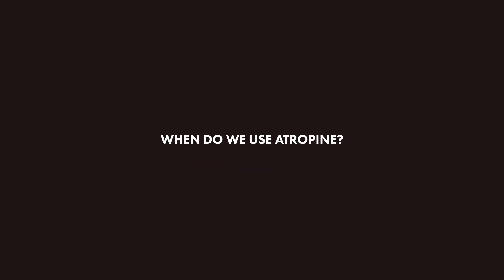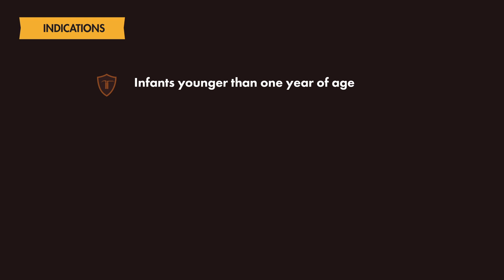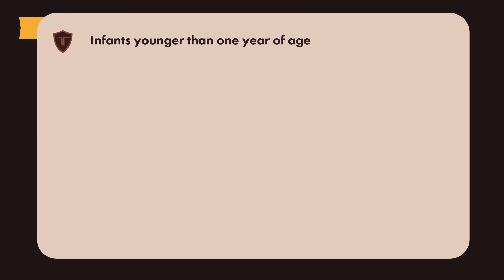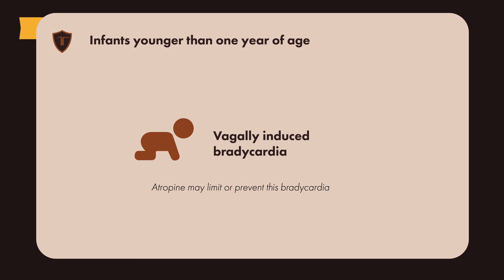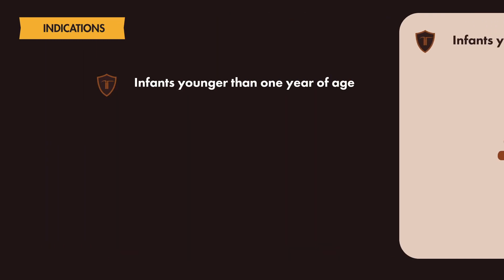Generally, there are three clinical scenarios where the use of atropine can be considered. The first is in infants younger than 1 year of age, as this population has a predilection for vagally induced bradycardia. Some observational studies and small trials in infants, children, and critically ill neonates suggest that pretreatment with atropine limits or prevents bradycardia without inducing ventricular arrhythmias.